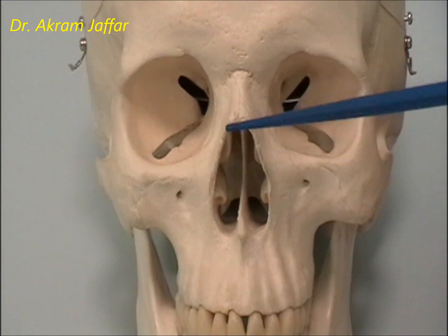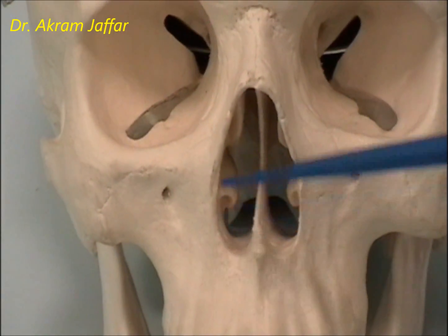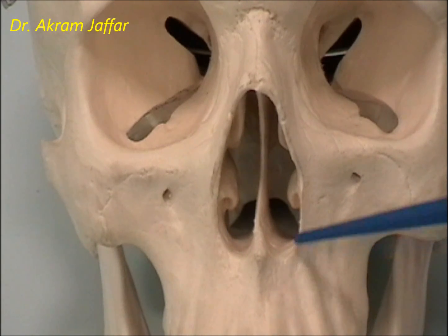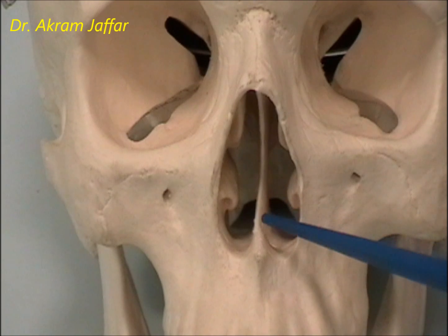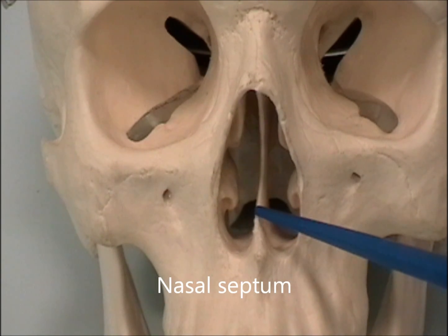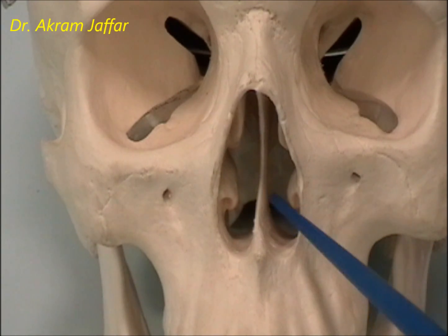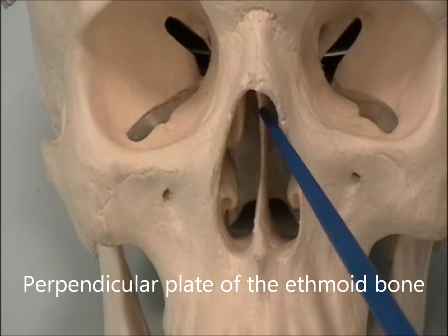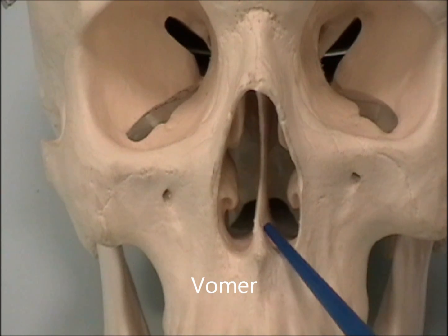This is the anterior nasal aperture. This is what we call the anterior nasal spine, and the skeleton of the nose here is completed by cartilage as well as bones. Inside the nose, you can see the nasal septum in the midline — in life, it is usually off the midline. The nasal septum is produced by two bones: the perpendicular plate of the ethmoid bone superiorly, and the vomer inferiorly, which is a separate bone by itself.